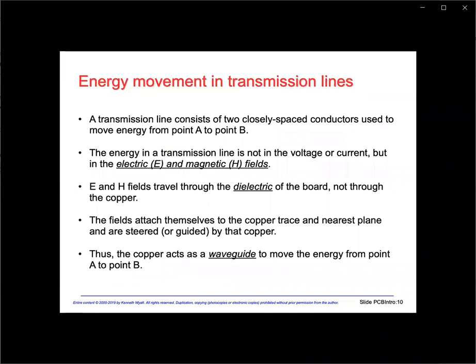Here are the basic concepts to understand. A transmission line consists of two closely spaced conductors used to move energy from point A to point B. The energy in a transmission line is not in the voltage or current, but in the electric and magnetic fields. E and H fields travel through the dielectric of the board, not through the copper. The fields attach themselves to the copper trace and nearest plane and are steered or guided by that copper — thus, the copper acts as a waveguide. Where we often get into trouble is when a noisy signal shares the same dielectric space or path as a quiet signal.